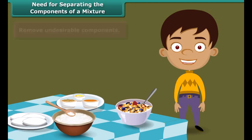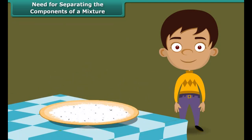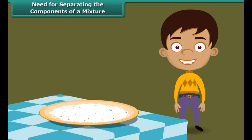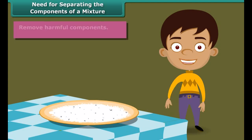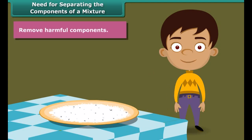Similarly, we find stones, mites, etc. in rice, wheat, pulses, etc. We remove them before cooking because they are harmful to our body. So, the second reason for separation is removal of harmful components.